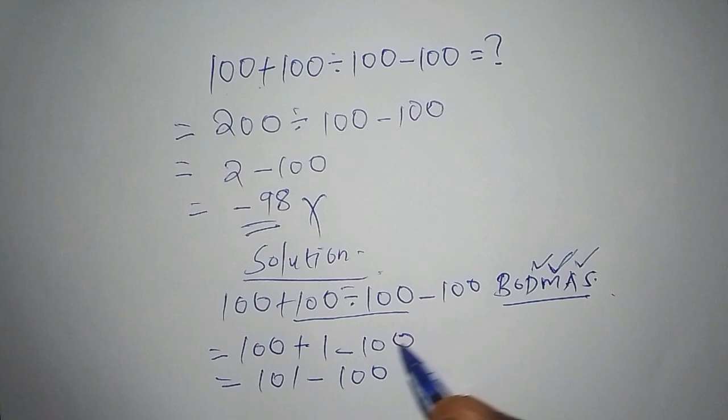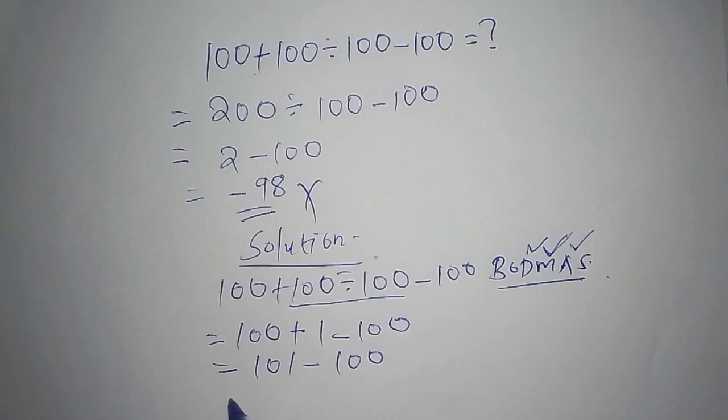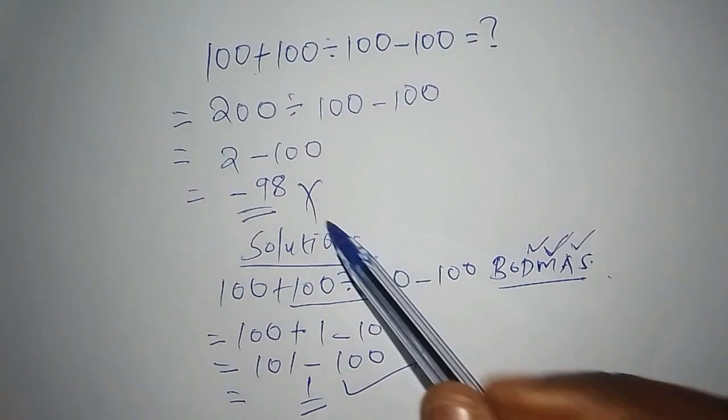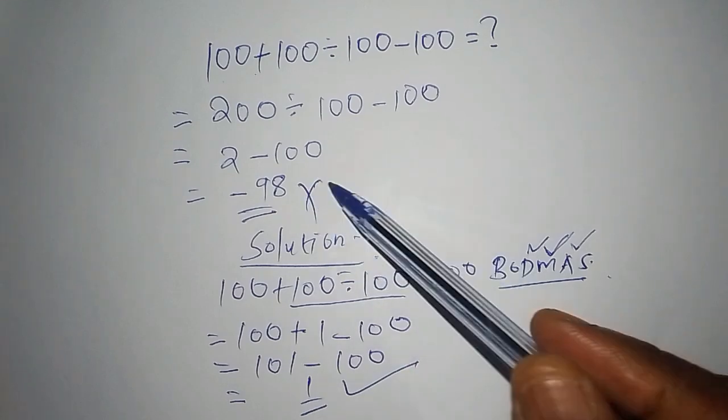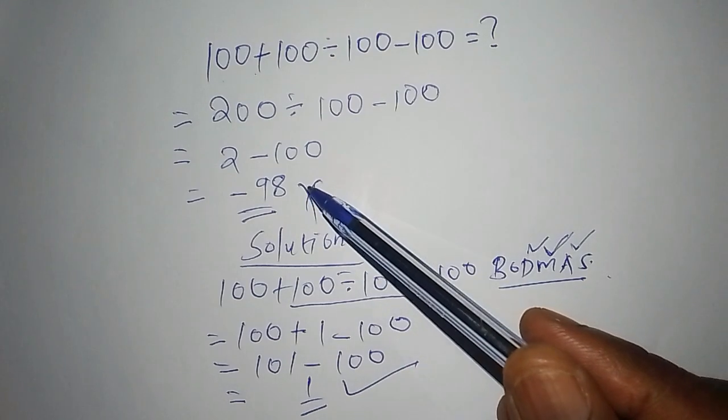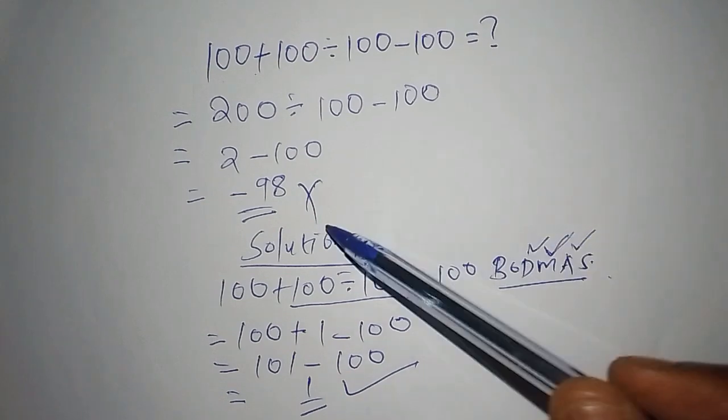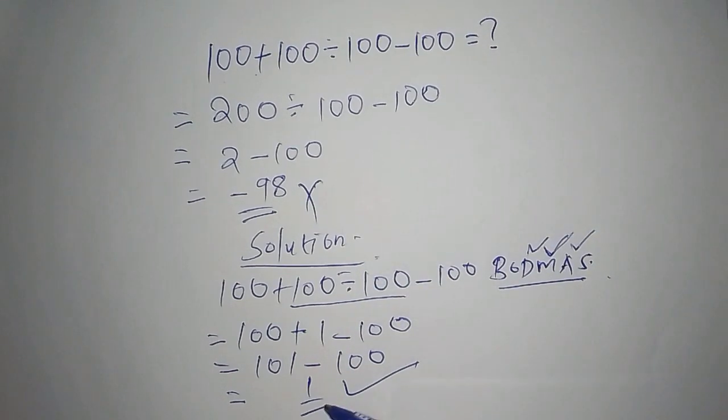Our final answer is 1, and not 98. This answer was given simply because there was no correct order of operation that was followed. That's why it was wrong. This one was correct because the correct order of operation was given.